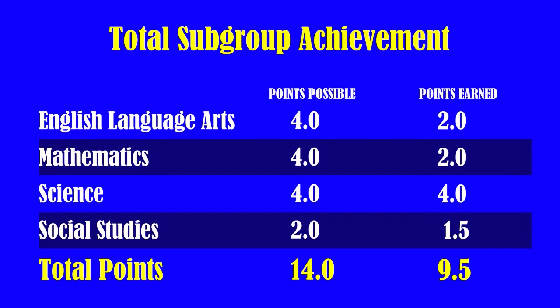Our subgroup achievement includes our super subgroup students. The super subgroup scores are recalculated based on the student's achievement level in advanced, proficient, basic, and below basic. The following categories are included in our super subgroup: Black, Hispanic, free and reduced lunch, special education students with individual education plans, and English language learners.